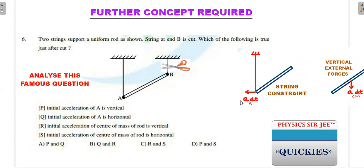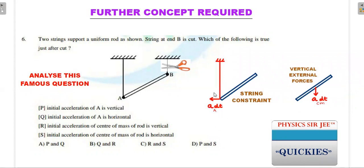The idea is to use the string constraint to find the acceleration of point A. As you can see on the right side of the screen, point A — the endpoint — can only have an acceleration just after the cut in the horizontal direction, because the inextensible string will not allow this point to move downward. So the acceleration of point A is leftward, and in dt seconds it acquires a velocity of a·dt, meaning the velocity direction dt seconds later is leftward.